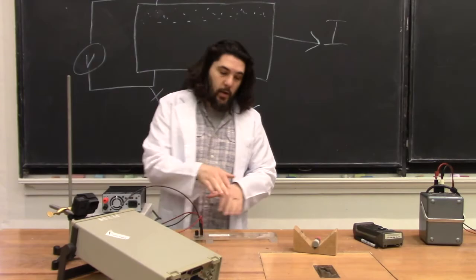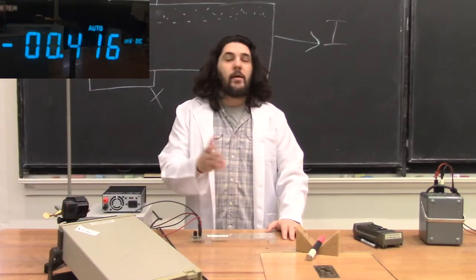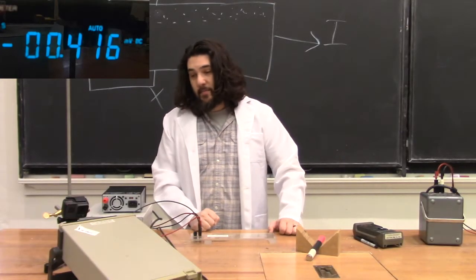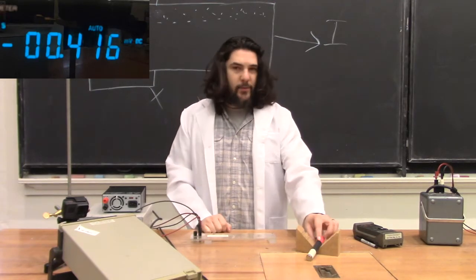And we'll do the same thing now with bismuth. Interestingly enough, our bismuth actually starts with an offset of minus 0.4 millivolts. So we'll have to account for that.